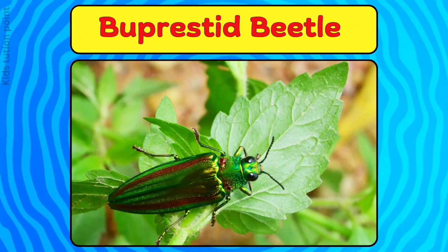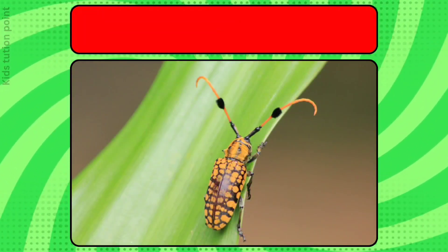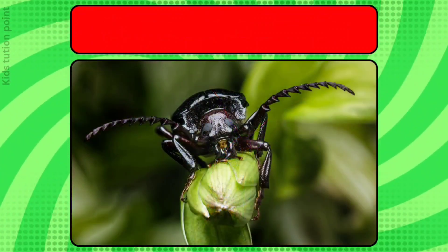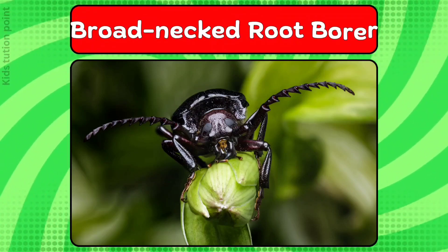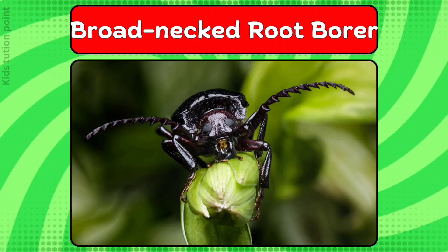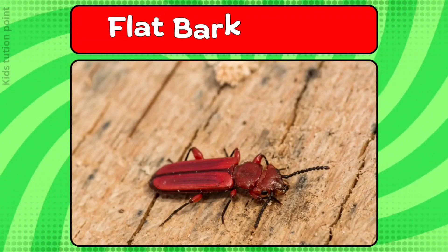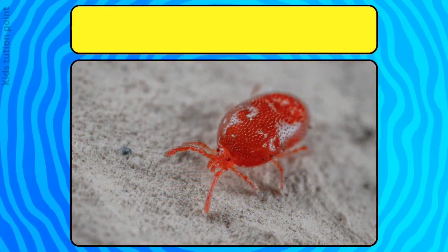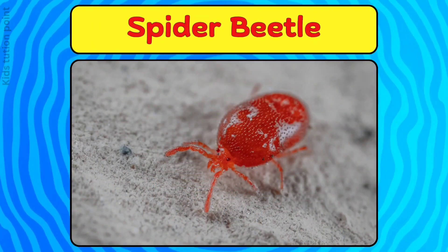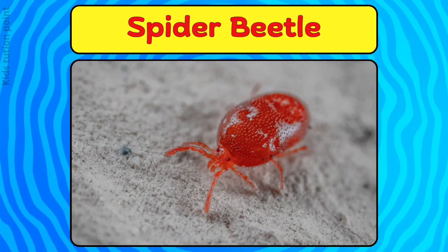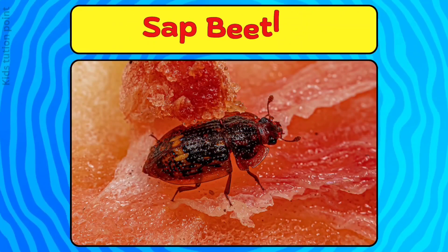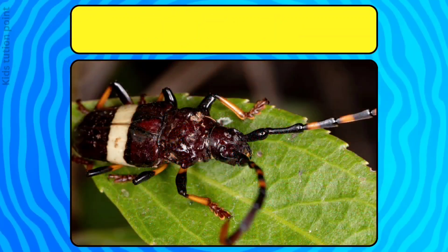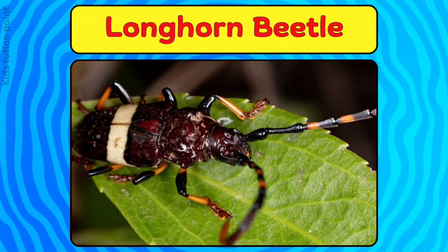Buprestid beetle. Capricorn beetle. Broad-necked root borer. Flat bark beetle. Spider beetle. Sap beetle. Longhorn beetle.